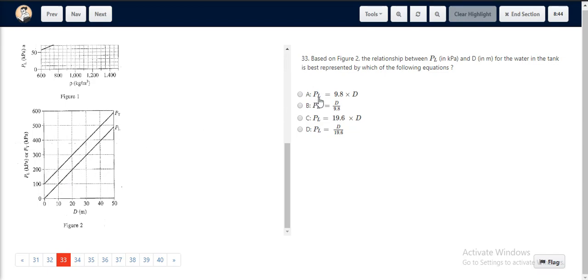Hence, PL is equal to 10 times D, or something approximately 10 times D. This is represented by option A, which states PL is equal to 9.8 times D, making it the correct choice.